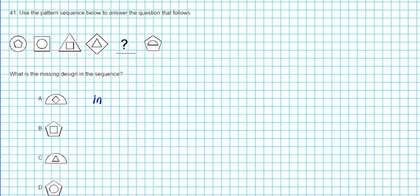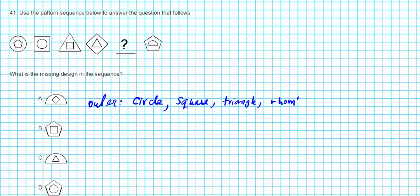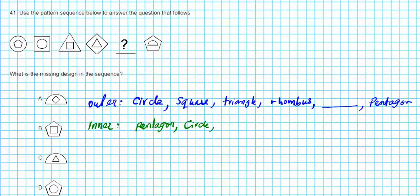Alright, let's start with the outer shapes. The outer starts with a circle, then you have a square, then a triangle, then a rhombus, then a missing shape, and finally a pentagon. Now let's write down the shapes of the inner figure. It starts with a pentagon, then a circle, then a square, then a triangle, then a missing shape, and the last one is a semicircle.